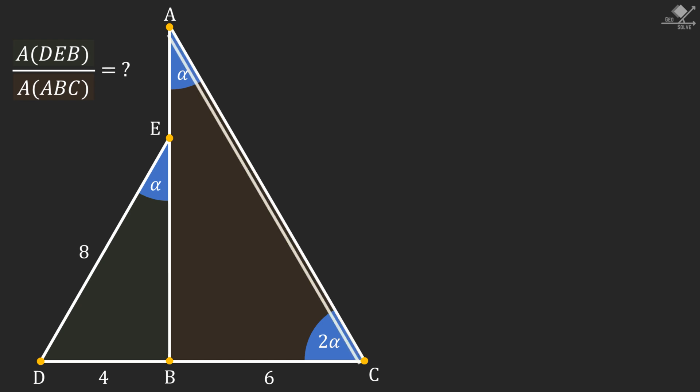First, draw a parallel line to line segment AC, passing through point E and intersecting line DC at point F.